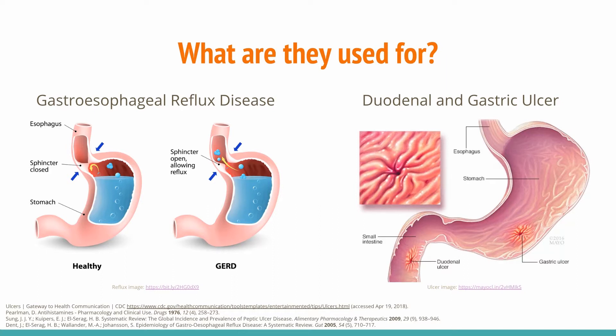Gastroesophageal reflux disease, better known as GERD or acid reflux disease, is a condition that occurs when the stomach acid flows into the esophagus and irritates the lining. Common symptoms include heartburn and a sour taste in the mouth. A review published in 2005 estimates that gastroesophageal disease has a prevalence of 10 to 20% in Western countries, compared to Asian nations that have a prevalence of less than 5%.